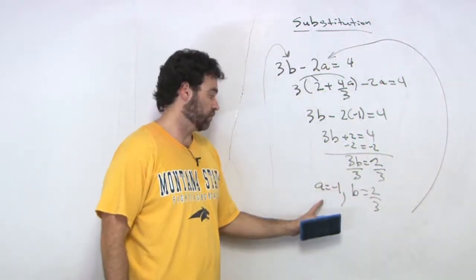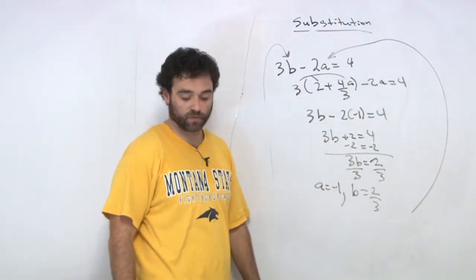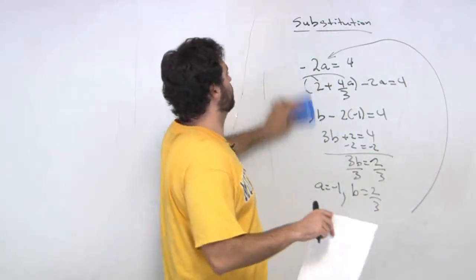And a was equal to negative 1. So there's our two answers. Negative 1, a is negative 1, b is 2 over 3. Let's do another thing called the addition method.